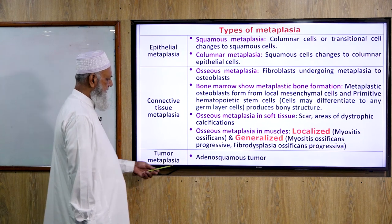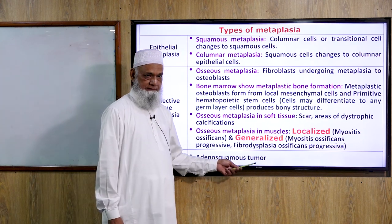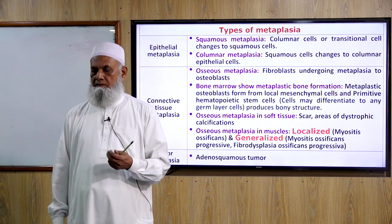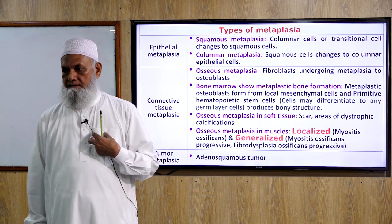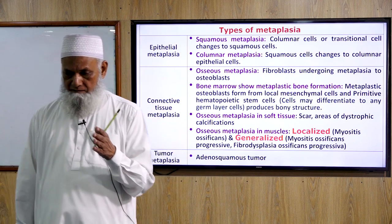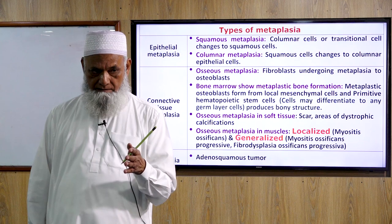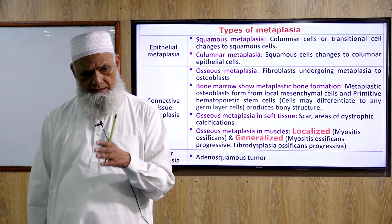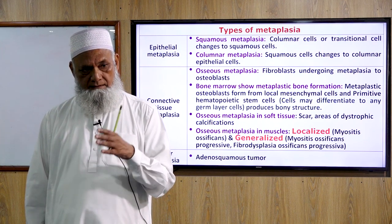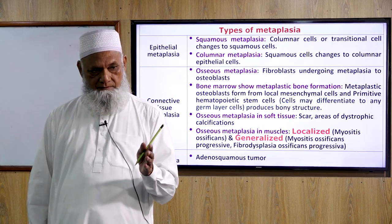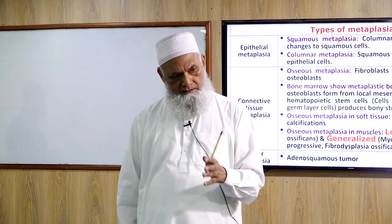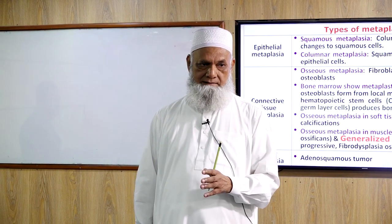Tumor metaplasia: adenosquamous tumor — for example, adenocarcinoma in the lungs may be columnar carcinoma where columnar cells are transferred to squamous cells. This tumor is then called adenosquamous carcinoma, which contains both squamous cell and columnar cell malignancy together.